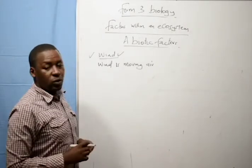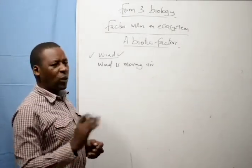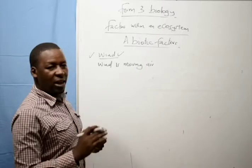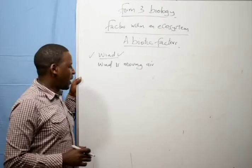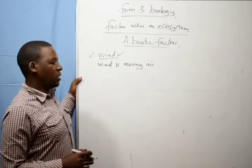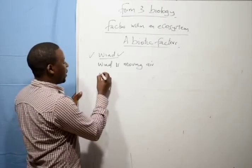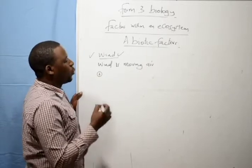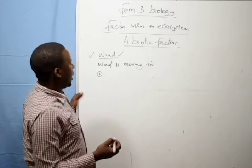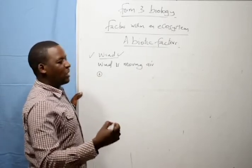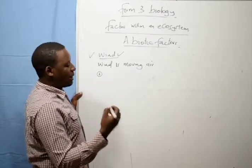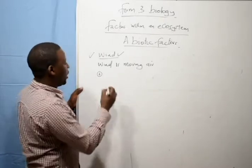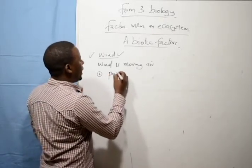Now, in this lesson I want us to look at the effect of wind in the ecosystem. I list down the effect of wind in an ecosystem because wind is a very important factor within an ecosystem. The first effect of wind is through wind, pollination takes place, meaning wind carries pollen grains from one point to another so it leads to pollination.